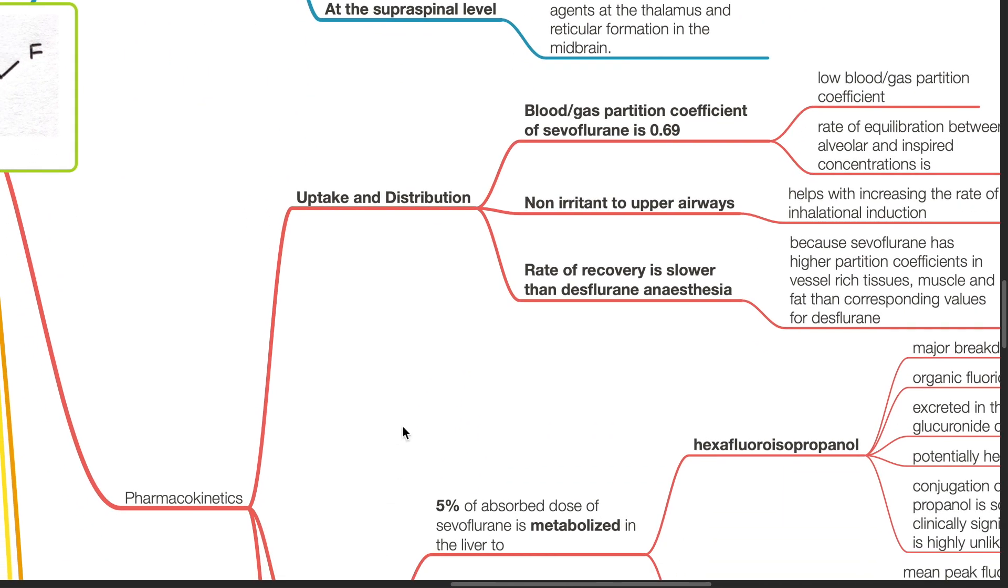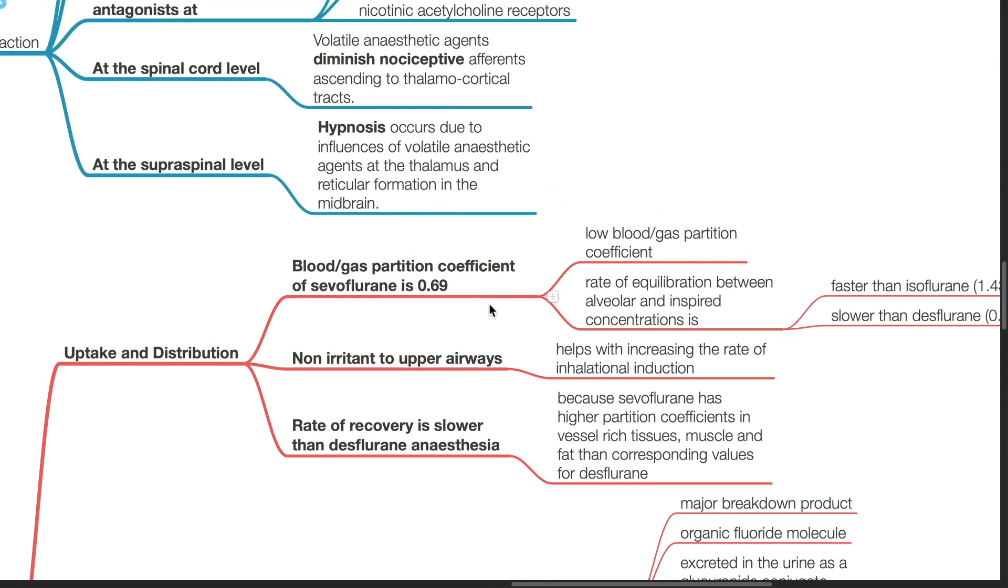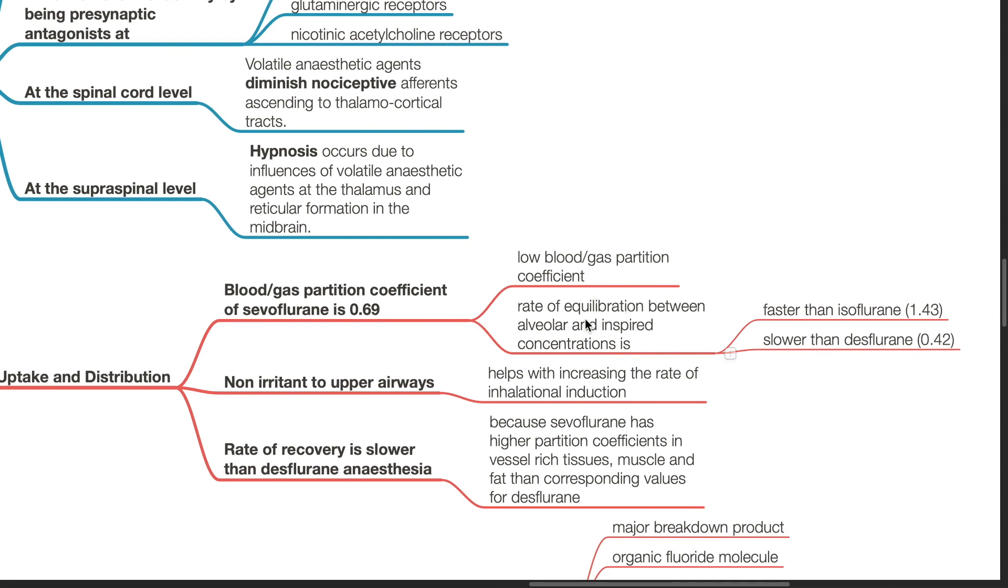Pharmacokinetics. Uptake and distribution of Sevoflurane. Having a blood gas partition coefficient of 0.69, Sevoflurane has a fast rate of equilibration between alveolar and inspired concentration. The rate of equilibration is faster than isoflurane but slower than desflurane. It is non-irritant to upper airways and helps with increasing the rate of inhalational induction. The rate of recovery is slower than desflurane anesthesia as Sevoflurane has higher partition coefficients in vessel-rich tissues, muscles and fat than corresponding values for desflurane.